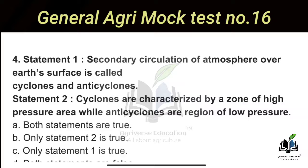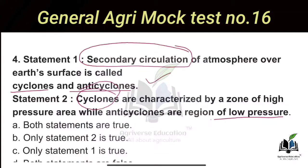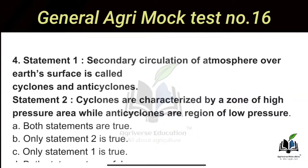The next question involves two statements. Statement 1: Secondary circulation of the atmosphere over the earth's surface is called cyclones and anti-cyclones. Statement 2: Cyclones are characterized by a zone of high pressure area, while anti-cyclones are the reason for low pressure. The correct answer is that only Statement 1 is true.